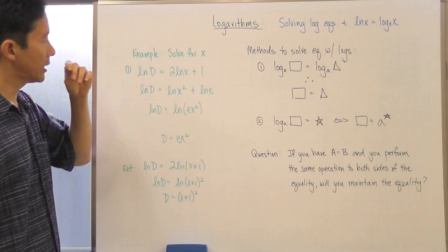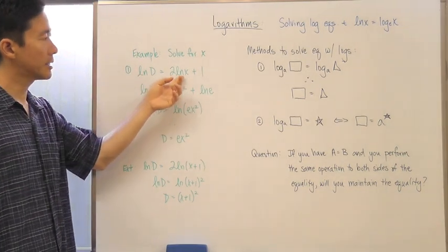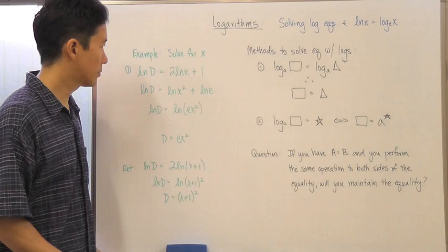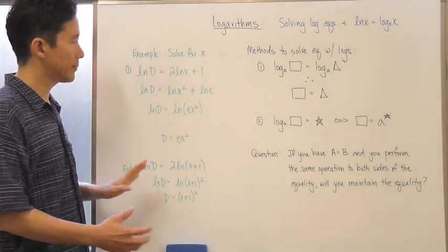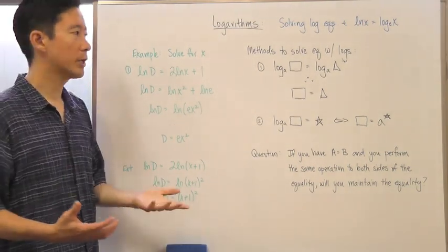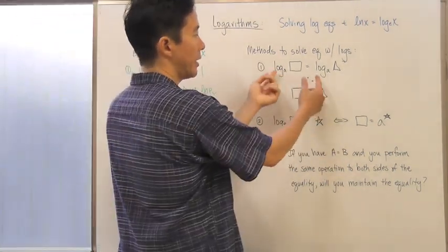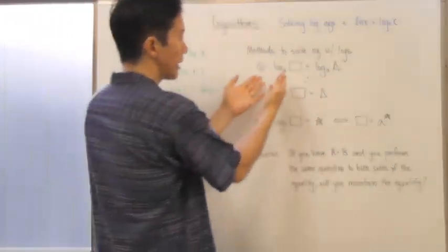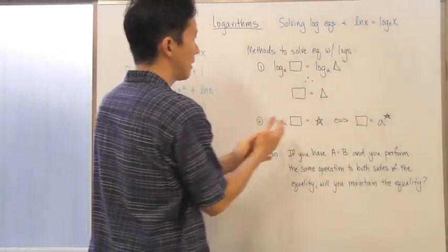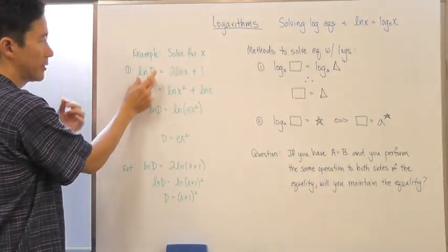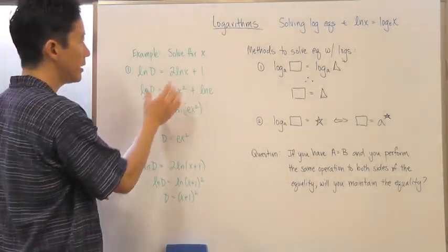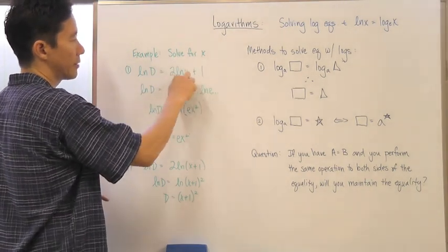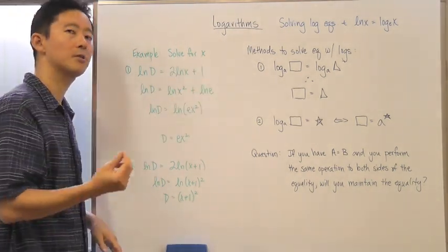Now, let's say for example you have the natural log of d is equal to 2x, 2 natural log of x plus 1. If you wanted to solve for x, what would you do? Well, in this particular case, notice again that what we want to try to do is we want to try to get so that you have a log base, well in this case it's base e, right? You want to get the natural log of something equal to the natural log of something. We've already got the natural log of d on this left hand side. We need to combine these here using our laws of logarithms into a single natural log.